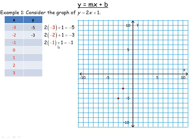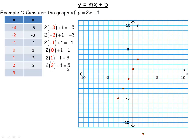Substituting negative 1 in place of x works out to a y value of negative 1, so the point negative 1, negative 1 is also on the graph. Putting 0 in: 2 times 0 plus 1 equals 1, so the point 0, 1 is on the graph. Notice what's appearing — it seems to be a straight line. Putting 1 in: 2 times 1 is 2, plus 1 makes 3, so 1, 3 is on the graph, still on the same line. Then 2 gives us 5, and 3 gives us 7. So 3, 7 up here is also on this graph.